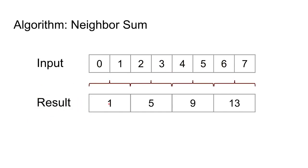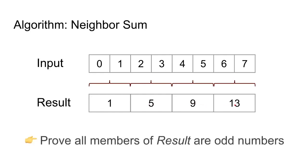Now can you prove all members of result are odd numbers? If you look at the result I have 1, 5, 9, and 13 - they're all odd numbers. But can we prove this in general case, that no matter what is the length of our input, I always end up with odd numbers?